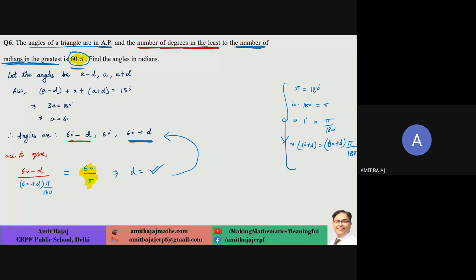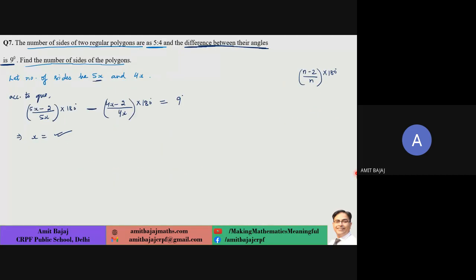For angles of a triangle in AP — we took the angles as A−D, A, and A+D. Since the sum of angles of a triangle is 180 degrees, A comes out to 60 degrees. Then the condition: find the ratio of the number of degrees in the least angle to the number of radians in the greatest angle. To convert degrees to radians, multiply by pi/180. After that you just cross-multiply and simplify to get the answer.